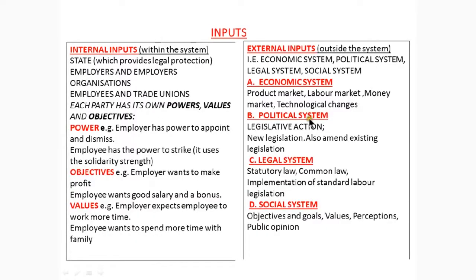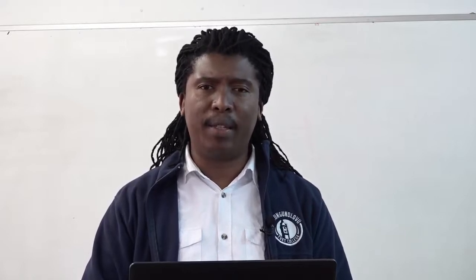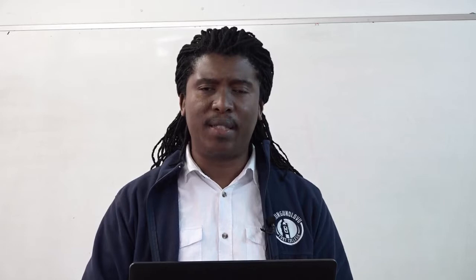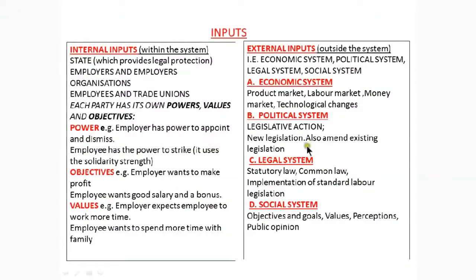The political system. Here we are looking at the national legislature where political parties are debating around issues of labor — for example, the abolishment of labor brokers. It is always discussed at parliamentary level that these labor brokers are problematic in the system. Here we say new legislation is created, and they also amend existing legislation.